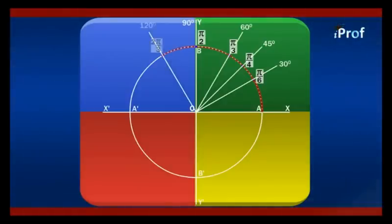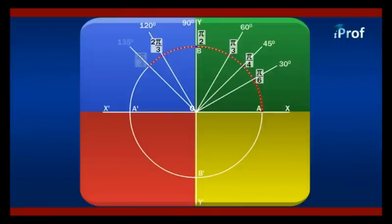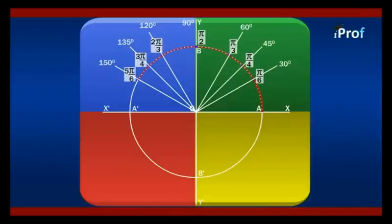Similarly, at 120 degrees it will be equal to 2π/3. The angles are taken in the positive, anti-clockwise direction. At 135 degrees, this will be equal to π/2 + π/4, that is 3π/4 radians. And at 150 degrees, it will be equal to π/2 + π/3, that is 5π/6. And at 180 degrees, it will be equal to π radians.